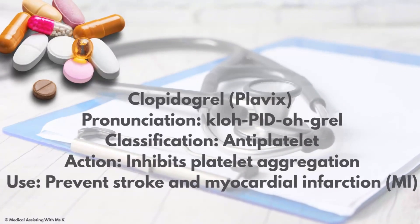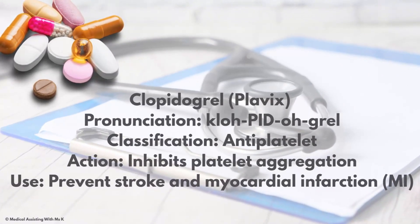Plavix — the generic for Plavix is clopidogrel. The classification is antiplatelet. The action: it inhibits platelet aggregation, meaning it prevents the forming of platelets. It's a blood thinner. The use is to prevent stroke and myocardial infarction, or heart attack.